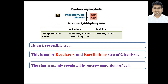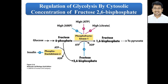One more activator of PFK-1 is fructose-2,6-bisphosphate. When blood glucose increases, insulin is secreted and binds receptors on the cell surface. The signaling mediated by insulin activates phosphofructokinase-2 (PFK-2), which converts fructose-6-phosphate into fructose-2,6-bisphosphate. This fructose-2,6-bisphosphate then activates PFK-1, the slowest enzyme of glycolysis, increasing its speed and ultimately increasing the overall rate of glycolysis.